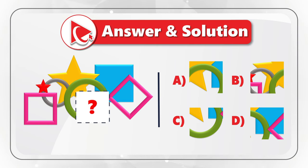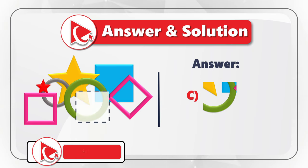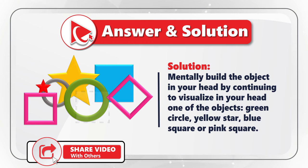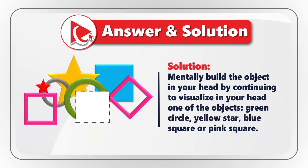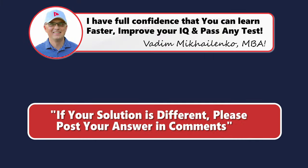The correct answer here is choice C. Let's confirm by moving this choice to fill the gap. To solve these types of challenges, you need to mentally build the object in your head by continuing to visualize one of the existing objects in the picture. I used the green circle — it's very obvious which choice would continue it. But you can also use the yellow star, blue square, or pink square. Do you know any other ways to solve these problems? Please post your ideas in comments.